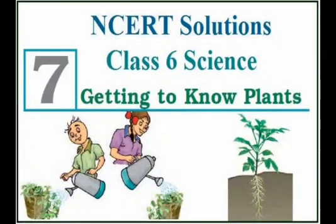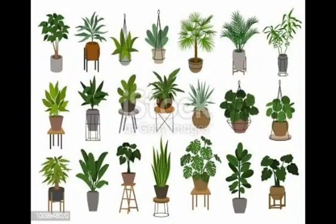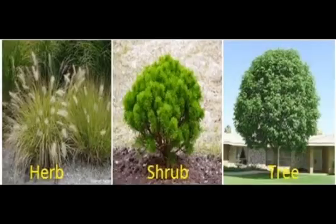Hello everyone, this is Goodwill English Academy online class and today's lesson will be getting to know plants, chapter seven. There are different kinds of plants — some plants are small while some are very big, some have green leaves while some have reddish ones, some have huge red flowers and some have tiny blue ones, while some have none. Today we will study about the different kinds of plants, which can be classified into three categories: herbs, shrubs, and trees.